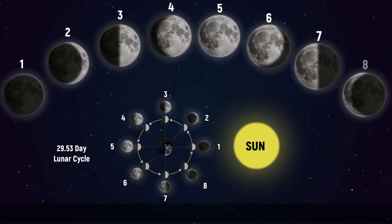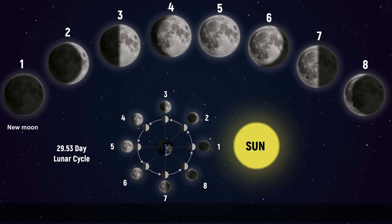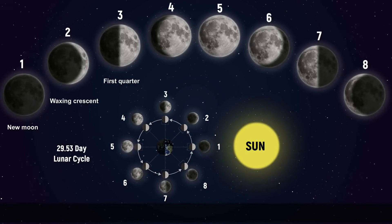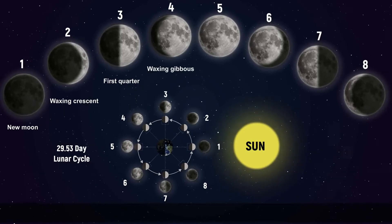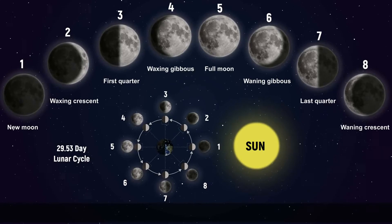There are a total of 8 phases that the moon goes through. They are New Moon, Waxing Crescent, First Quarter, Waxing Gibbous, Full, Waning Gibbous, Last Quarter, and Waning Crescent.